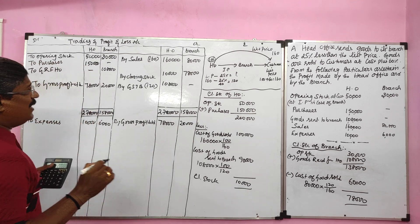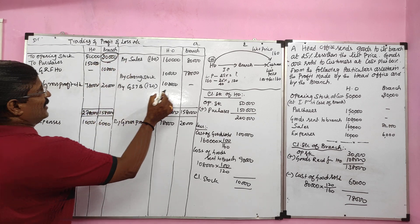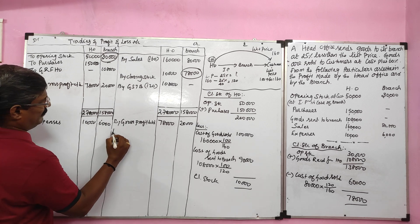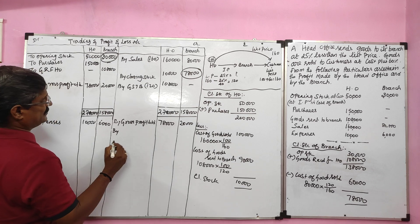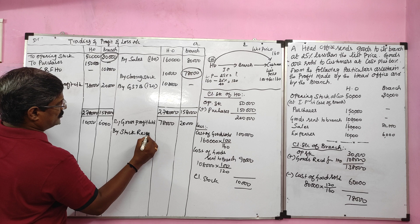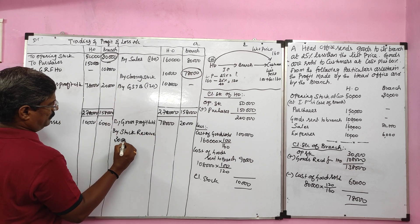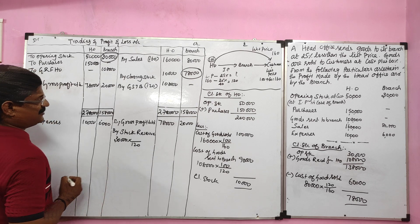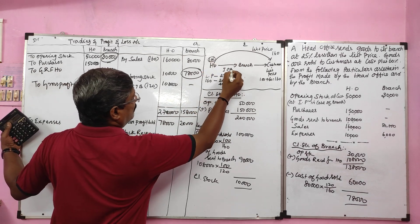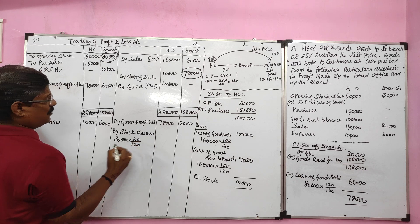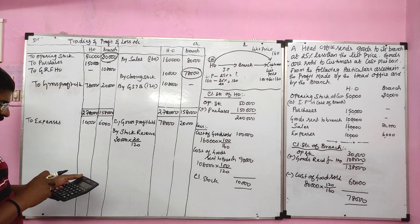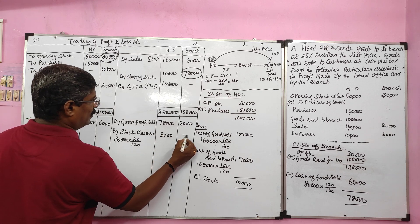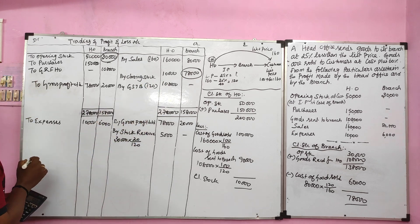We need to take stock reserve on opening stock of branch as well as closing stock of branch. Stock reserve on opening stock of branch is recorded on the credit side of profit and loss account in the head office column. Opening stock of branch: 30,000; branch cost price is 120; the difference between head office cost price and branch invoice price is 20 — that is the profit earned by head office. So 30,000 multiplied by 20 divided by 120 equals 5,000, recorded in head office column.